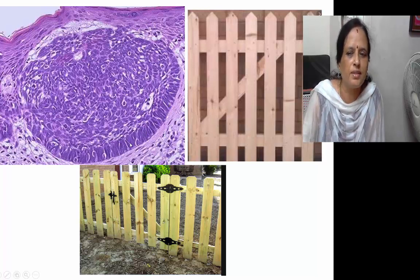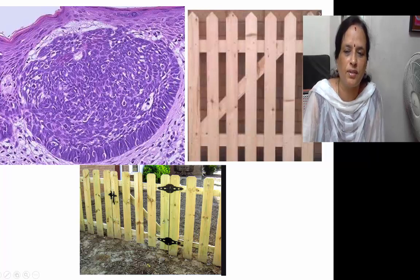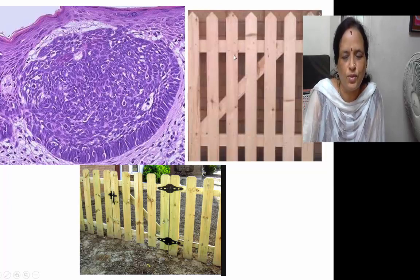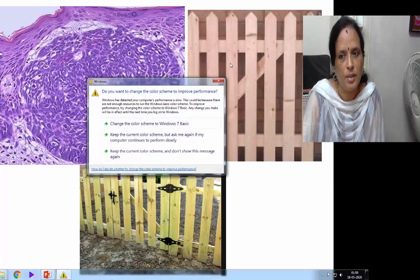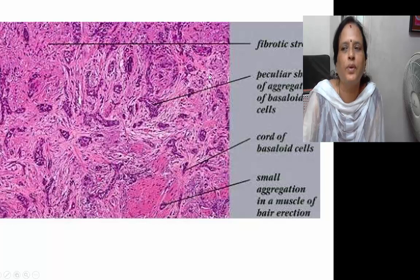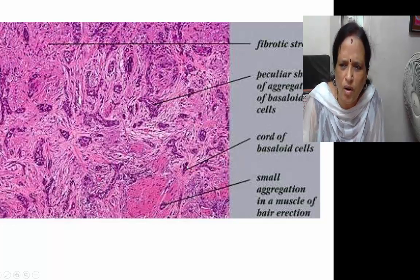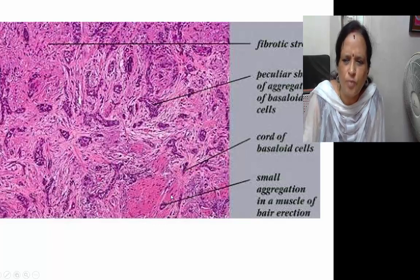The peripheral cells are compared to a picket fence appearance — the cells lying parallel to each other, like the fence we use for a garden. Remember this: picket fence. Looking at the fibrotic stroma again, there are cords of cells and peculiar aggregations of basaloid cells — small aggregates.